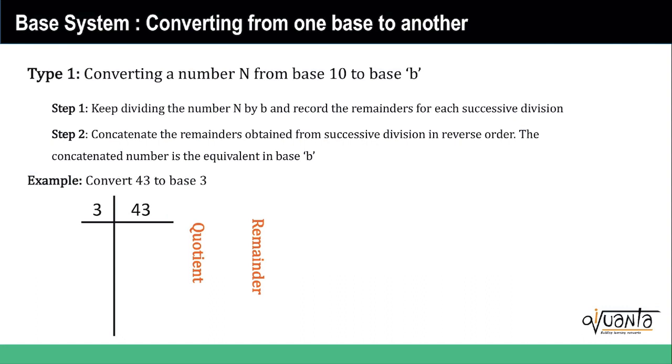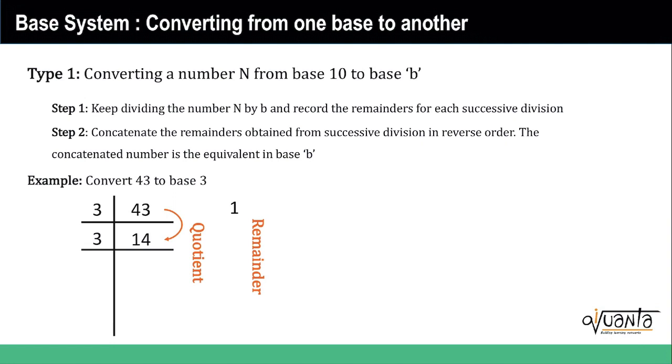This will become more clear once we do this example. So we are trying to convert number 43 from base 10 to base 3. We start dividing. We divide 43 by 3, we get quotient 14 and we have the first remainder 1.